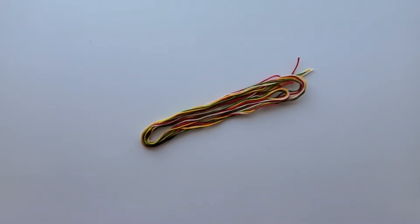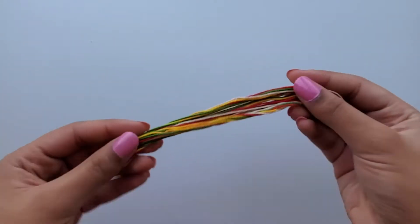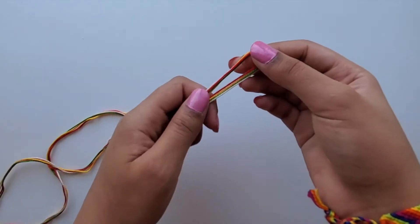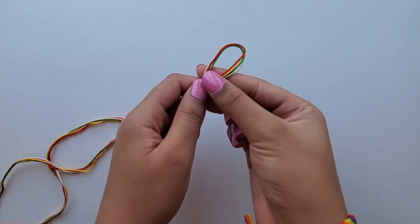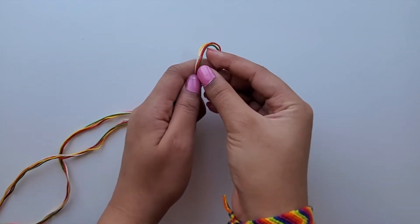In order to make this bracelet, choose four different colors of string and then cut out 50 inches of each string. Fold your strings in half and then curve the end for a loop. Then I'm going to take some tape and tape one side of the strings down.